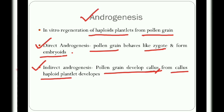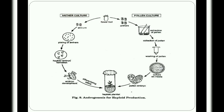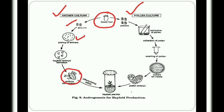Androgenesis can be accomplished by two methods: anther culture and pollen culture. In anther culture, anthers are excised from the flower bud, then surface sterilized with 70% alcohol and 1% sodium hypochlorite. After sterilization, the anthers are plated on solid MS medium and grown into embryoids. After a few days, these embryoids are transferred into MS medium in test tubes and plantlets are regenerated.